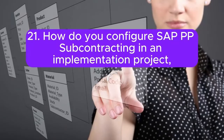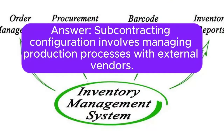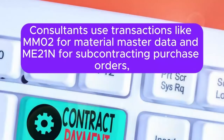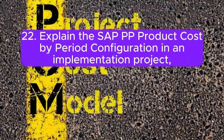Question 21: How do you configure SAP PP subcontracting in an implementation project, and what considerations are important for managing production processes with external vendors? Subcontracting configuration involves managing production processes with external vendors. Consultants use transactions like MM02 for material master data and ME21N for subcontracting purchase orders, configuring the system to support efficient collaboration with external vendors.